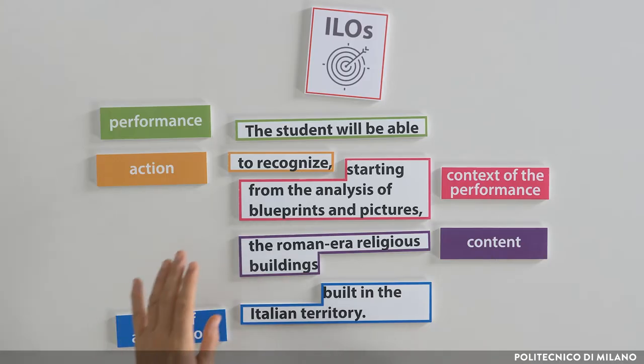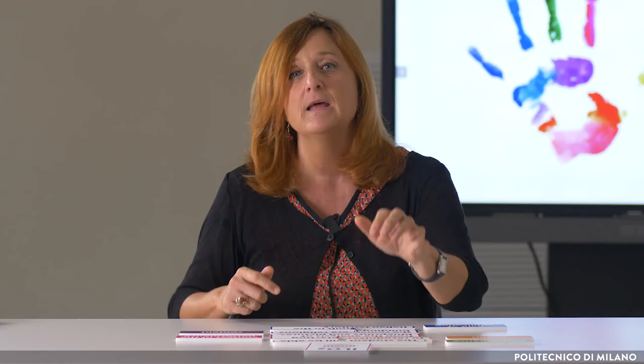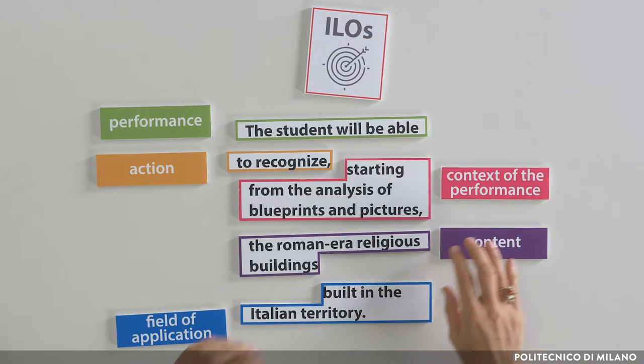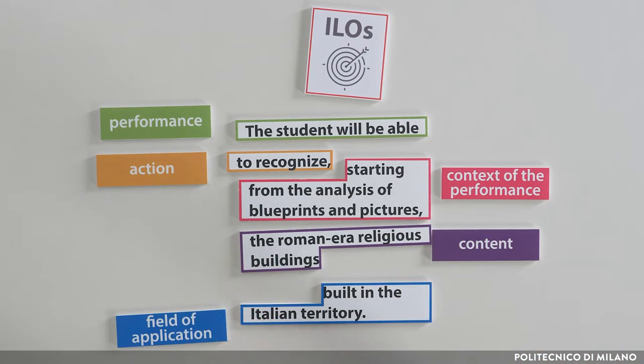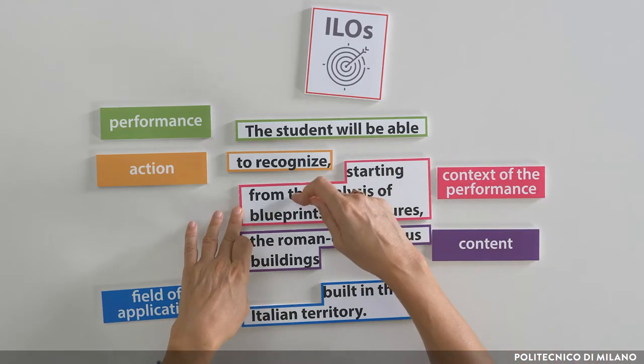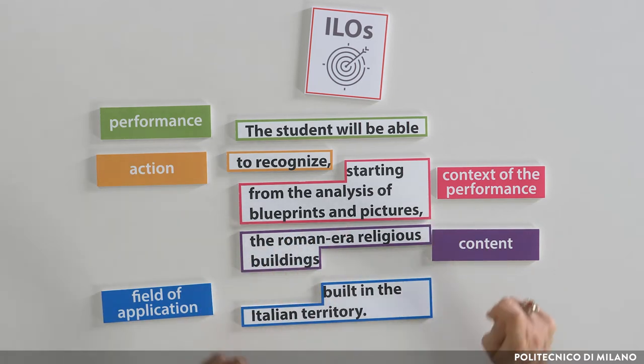So, if my goal is to assess the achievement of this intended learning outcome, the test I submit to my students will first activate the action described as "to recognize." Then I will have to activate it in terms of the content indicated in the intended learning outcome — in this case, the Roman era religious buildings — and within the context of activation: starting from the analysis of blueprints and pictures.